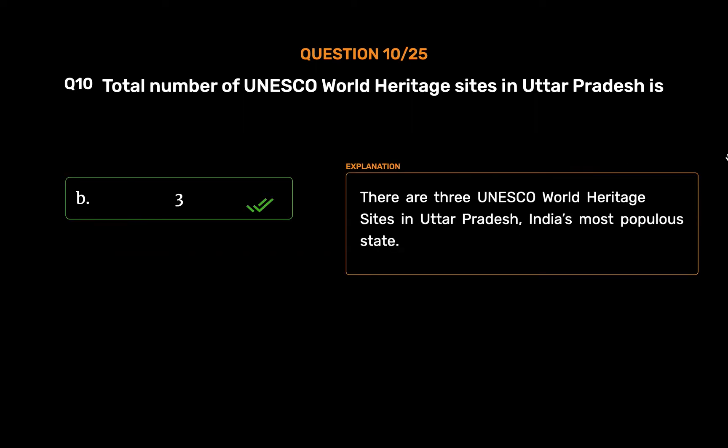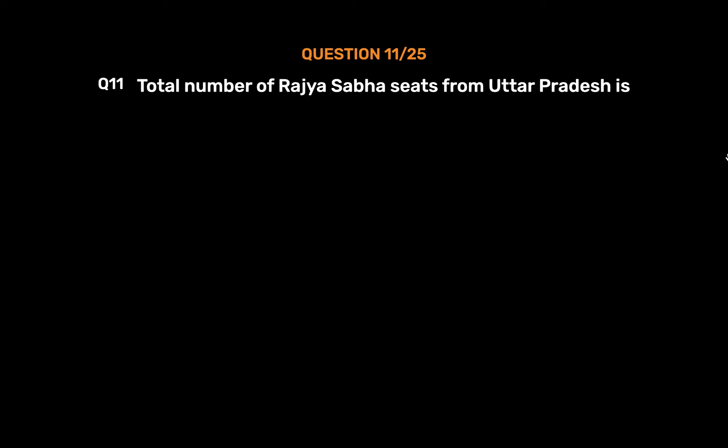There are three UNESCO World Heritage Sites in Uttar Pradesh, India's most populous state.